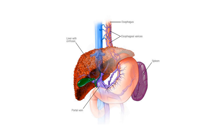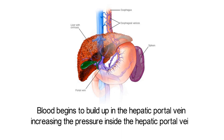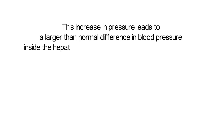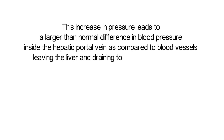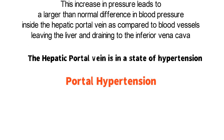The hepatic portal vein is thus unable to drain blood into the liver as efficiently as normal. Therefore, with no decrease in blood flow to the hepatic portal vein and an increase in resistance to blood flow through the liver, blood begins to build up in the hepatic portal vein, increasing the pressure inside it. This increase in pressure leads to a larger than normal difference in blood pressure inside the hepatic portal vein compared to blood vessels leaving the liver and draining to the inferior vena cava. Thus, the hepatic portal vein is in a state of hypertension known as portal hypertension.